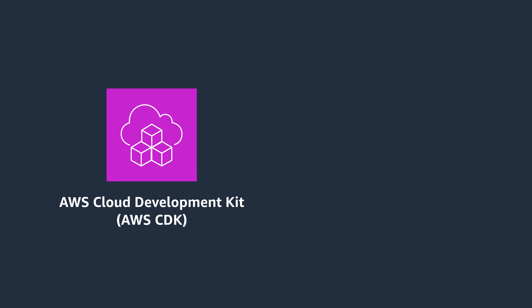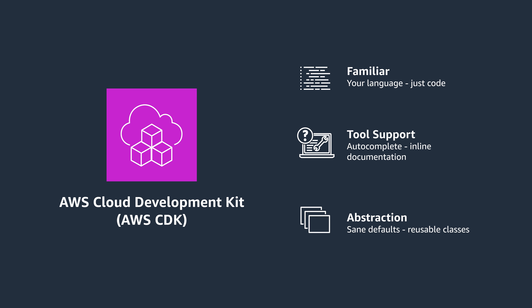The AWS Cloud Development Kit, also known as AWS CDK, is an open-source software development framework to model and provision your cloud application resources using familiar programming languages such as Python, JavaScript, TypeScript, Java, or C#. The CDK empowers you to use high-level construct libraries that encapsulate AWS best practices, allowing you to create cloud applications without needing to know the details of the AWS services involved.